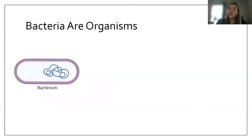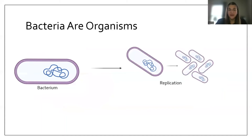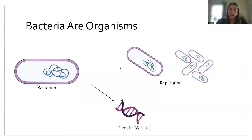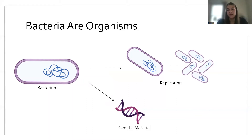Bacteria are organisms just like you and me. They can replicate and they have something called genetic material. Every living organism has genetic material that carries important information — for example, your hair color or eye color is passed on from your parents to you via genetic information. The foundational unit of genetic material is called a gene, and individual genes carry information necessary for some kind of function.